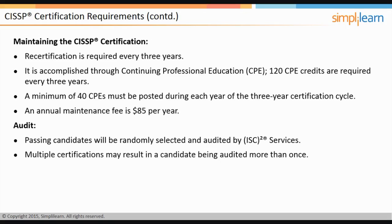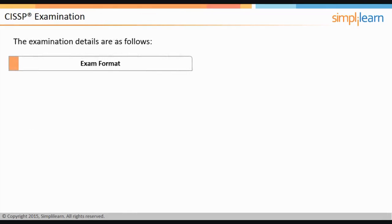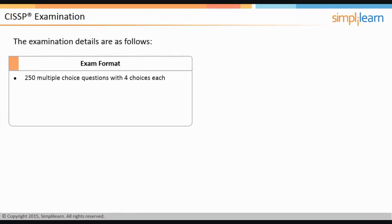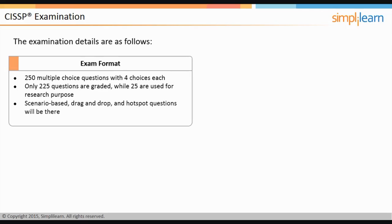The CISSP examination consists of 250 multiple-choice questions with four choices each. Only 225 questions are graded, while 25 are used for research purposes. There may be scenario-based questions with more than one multiple-choice question associated, as well as drag-and-drop and hotspot questions. There is no penalty for incorrect answers, so candidates should not leave any questions unanswered.